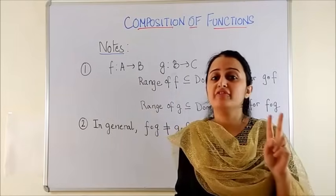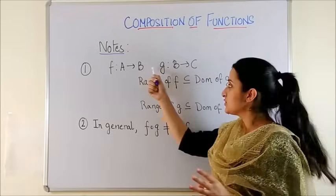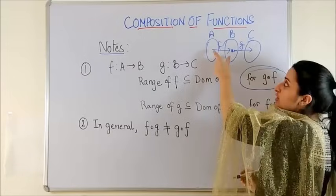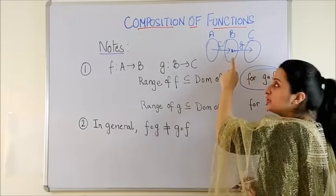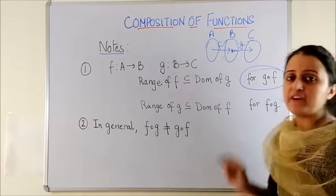There are two very important points to be remembered. So if F is a function from A to B and G is a function from B to C, range of F which is B should be the starting point or the domain for the next function G for G of F to exist.